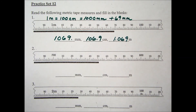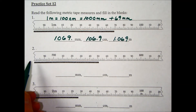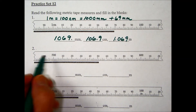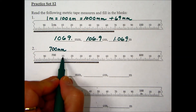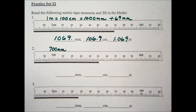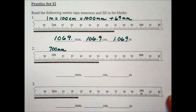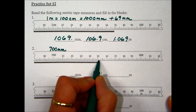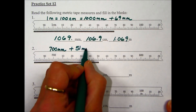On problem number two, we determine the length of this line. This ruler also has a break. With the smallest division being millimeters, the scale shows 700 here, going along 710, 720, 730, 740, 750. The end of the line is at 710, 720, 730, 740, 750, and it looks like one millimeter past 50, so we add 51 millimeters onto 700 for a total of 751 millimeters.